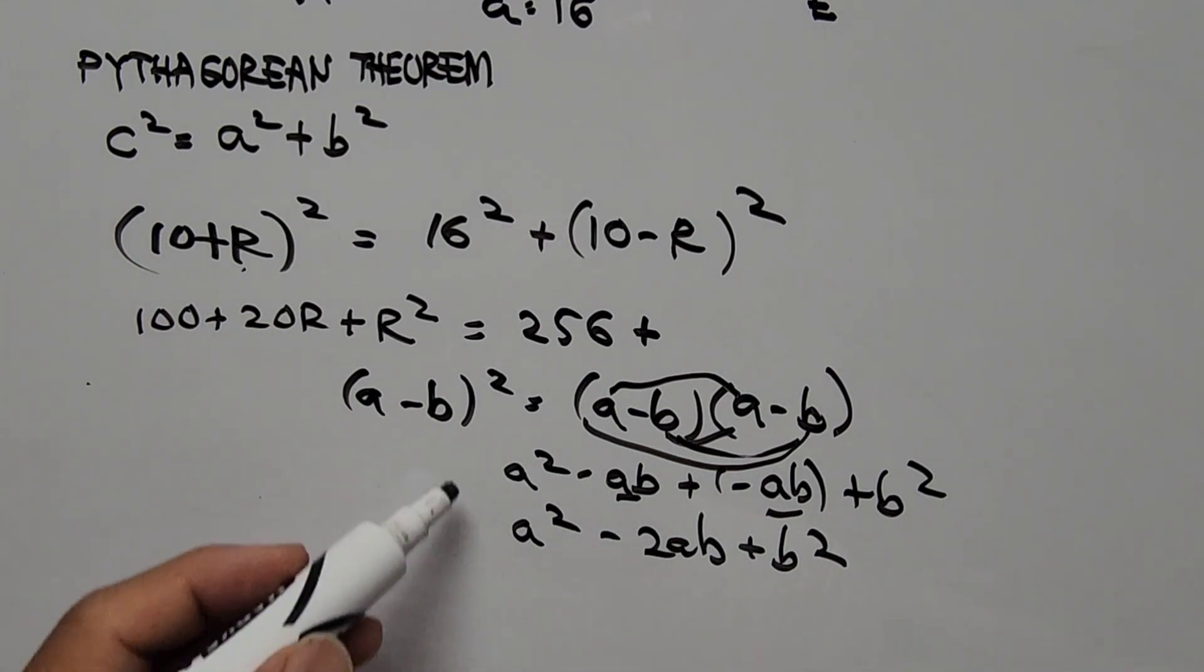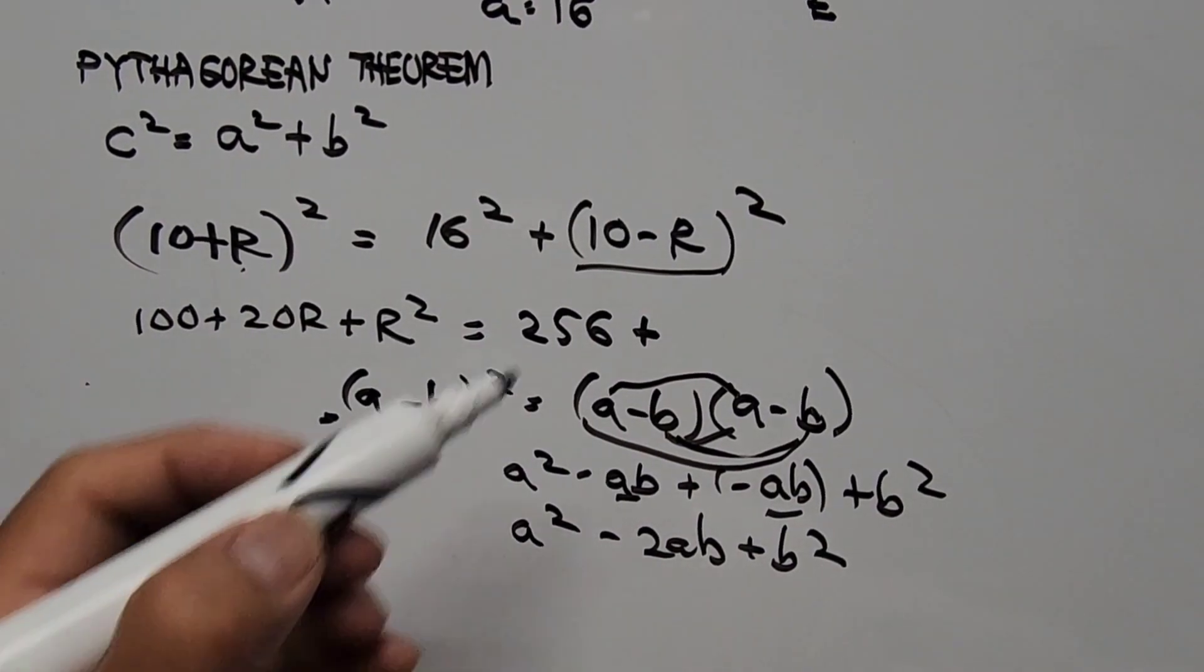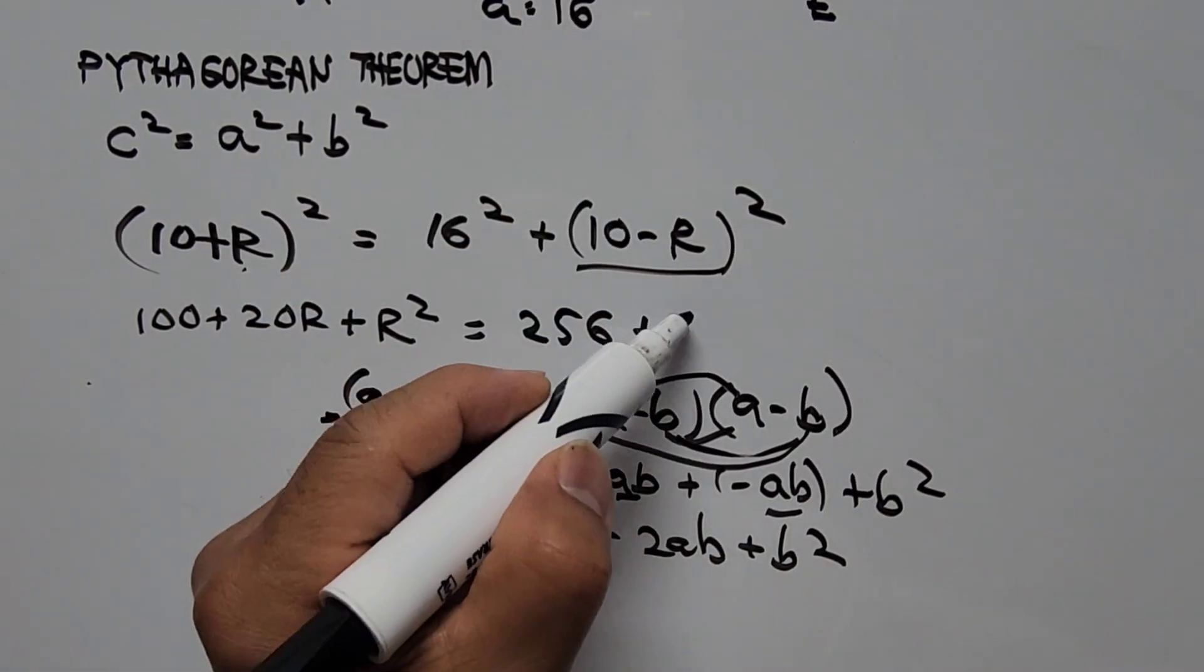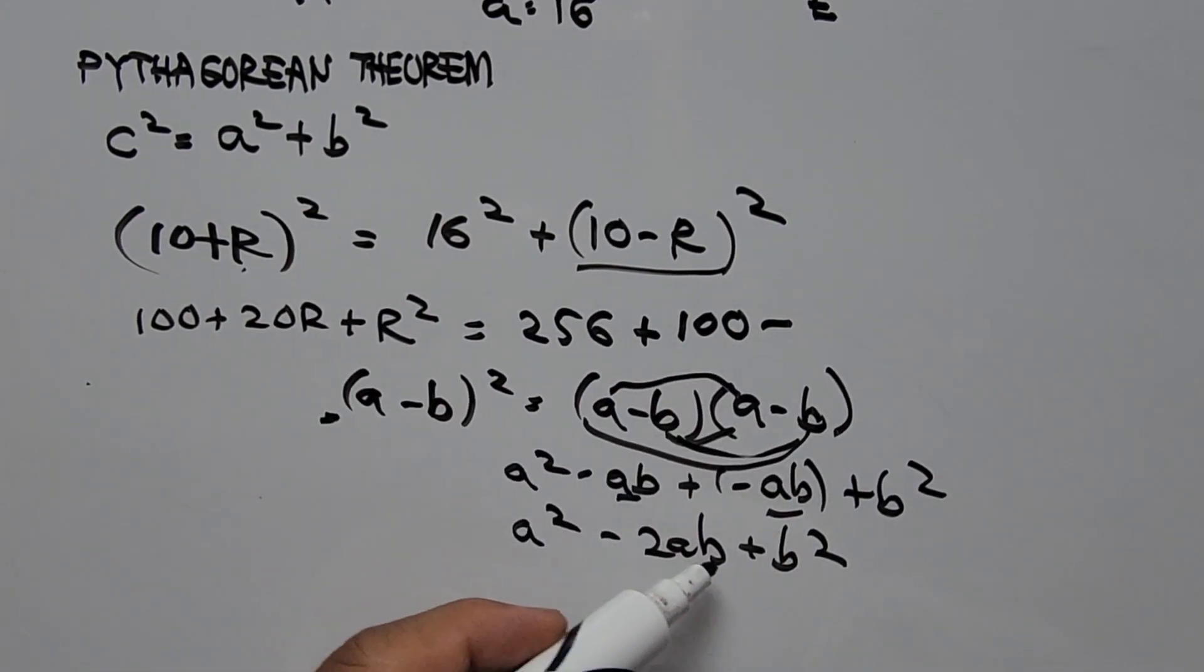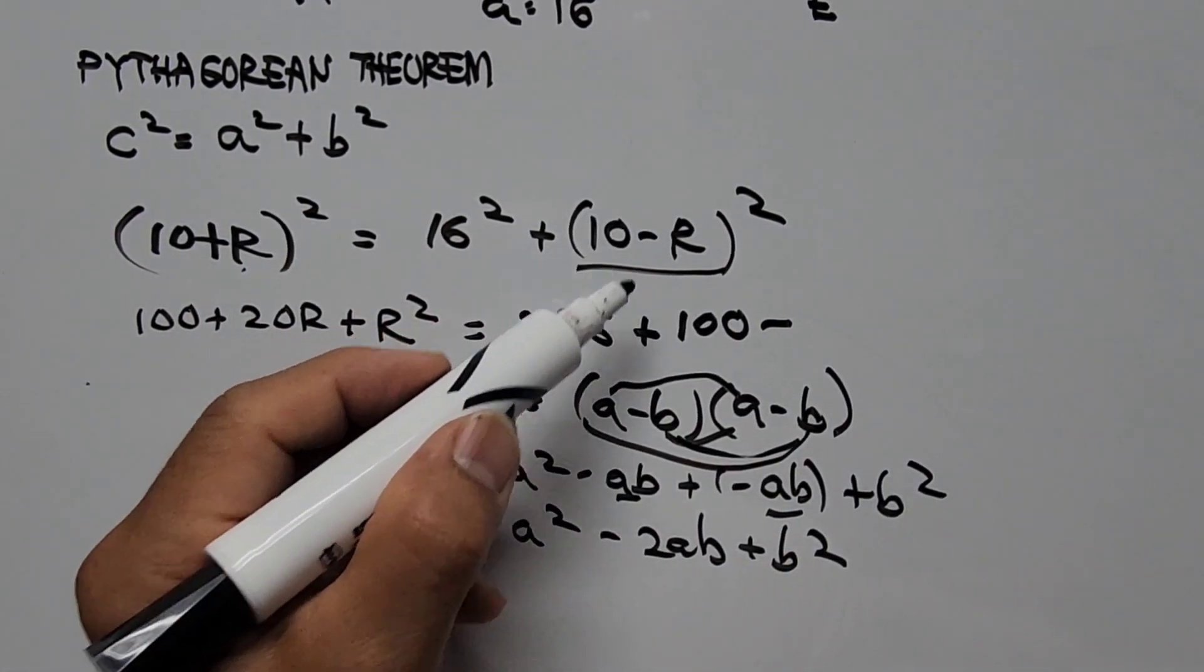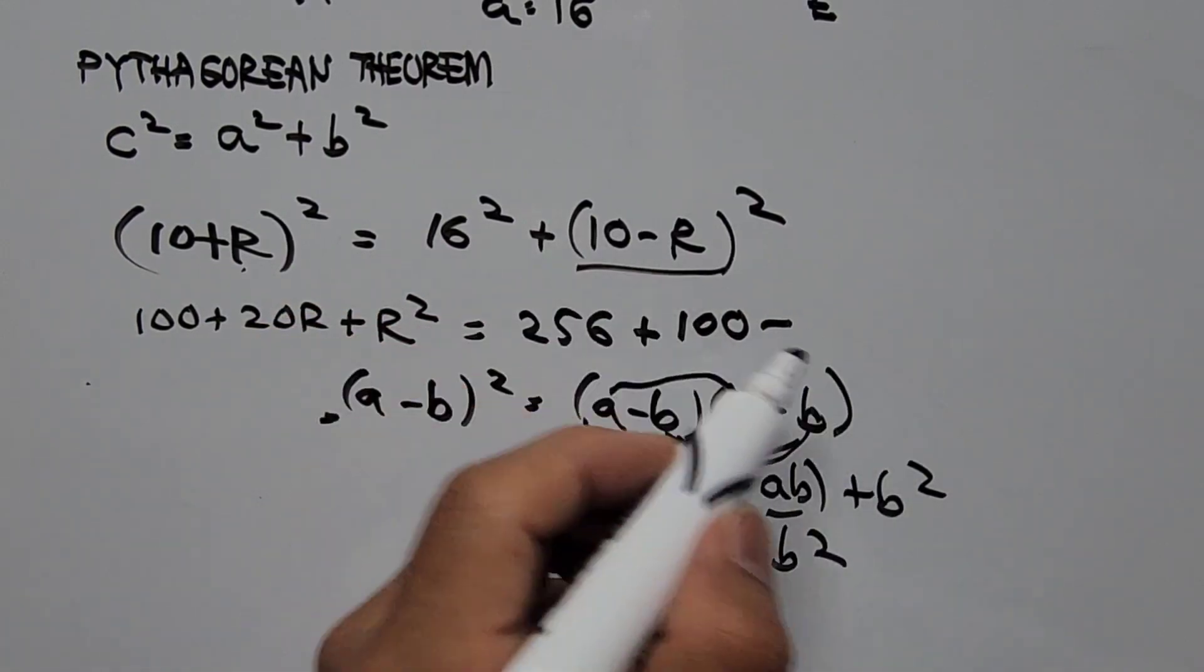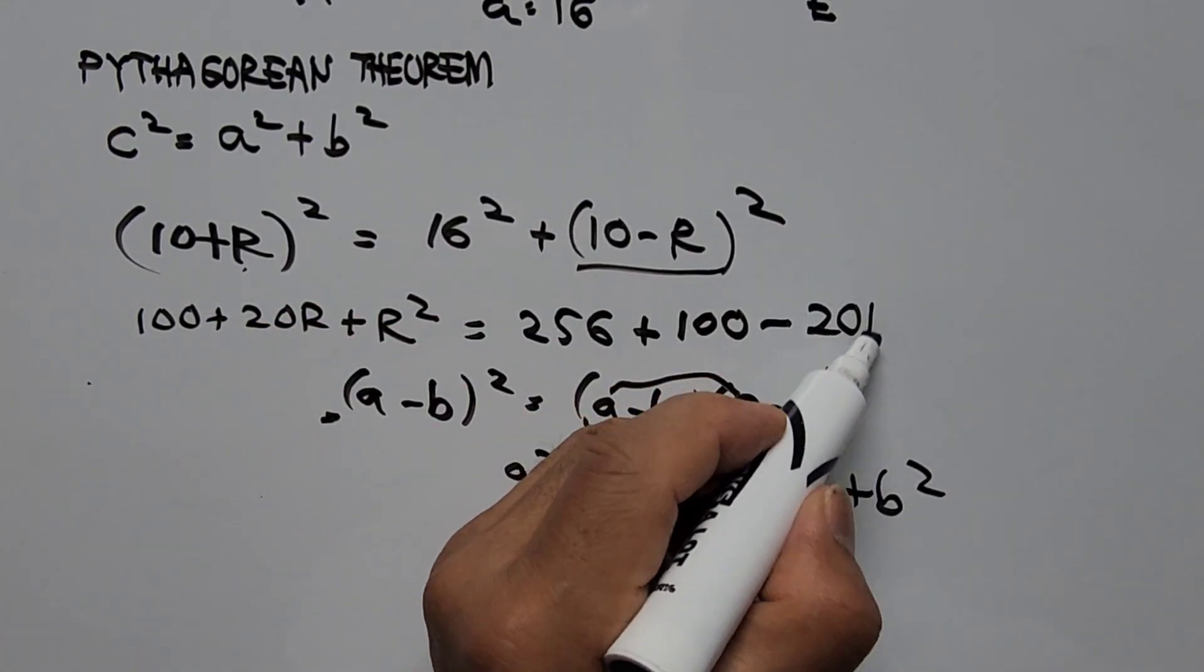So we'll be using this formula for this term. So A squared here is 10 squared, so that is 100. And then minus 2 times AB. A is 10, B is R. So 2 times 10 is 20, 20R.